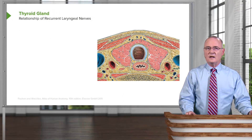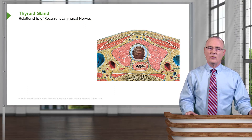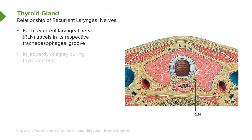This slide shows a very important clinical and anatomic relationship: the relationship of the thyroid gland to the recurrent laryngeal nerves. Here is the right recurrent laryngeal nerve, lying within the tracheoesophageal groove — the groove between the trachea and the esophagus, which lies posteriorly. Here is your left recurrent laryngeal nerve, which also travels in the tracheoesophageal groove on that side.